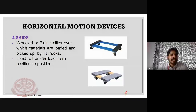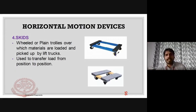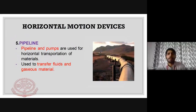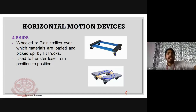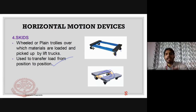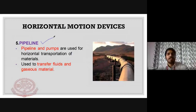Skids and wheeled or plane trolleys are another type of horizontal motion device. They are used to transfer load from position to position and can rotate 360 degrees. They are known as skids.